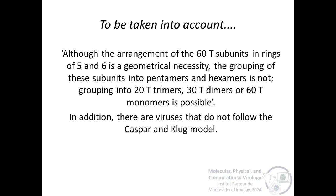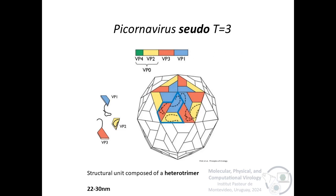Something to consider is that although the arrangement of the 60T subunits in rings of 5 and 6 is a geometrical necessity, the grouping of these subunits into pentamers and hexamers is not. Grouping into 20T trimers, or 30T dimers, or 60T monomers is also possible. And, in addition, there are viruses that do not follow the Caspar-Klug model. For example, the case of picornavirus. The capsid is composed of 60 asymmetric units composed each of 3 proteins for a total of 180 subunits. But these capsids do not have T equals 3 symmetry, as described by Caspar-Klug model, because the basic unit is composed of 3 different proteins, VP1, VP2, and VP3.